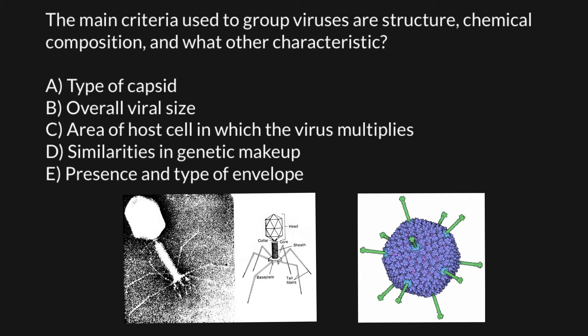Answer C: the array of host cells in which the virus multiplies. This is not a very reliable source of information. For example, two viruses that cause liver damage — Hepatitis A and Hepatitis B — are totally two different viruses, yet they damage the same organ and have similar symptoms.